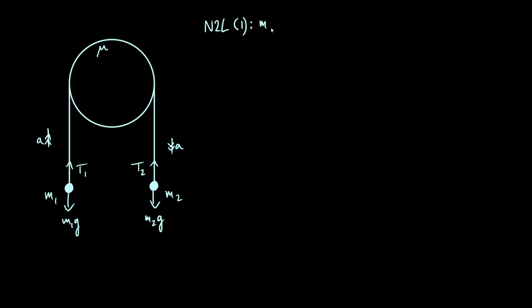So the mass times the acceleration is simply m1a. The resultant force is, we're looking at the force in the direction of the acceleration, so that's upwards, it's t1 minus m1g because they're in opposite directions.